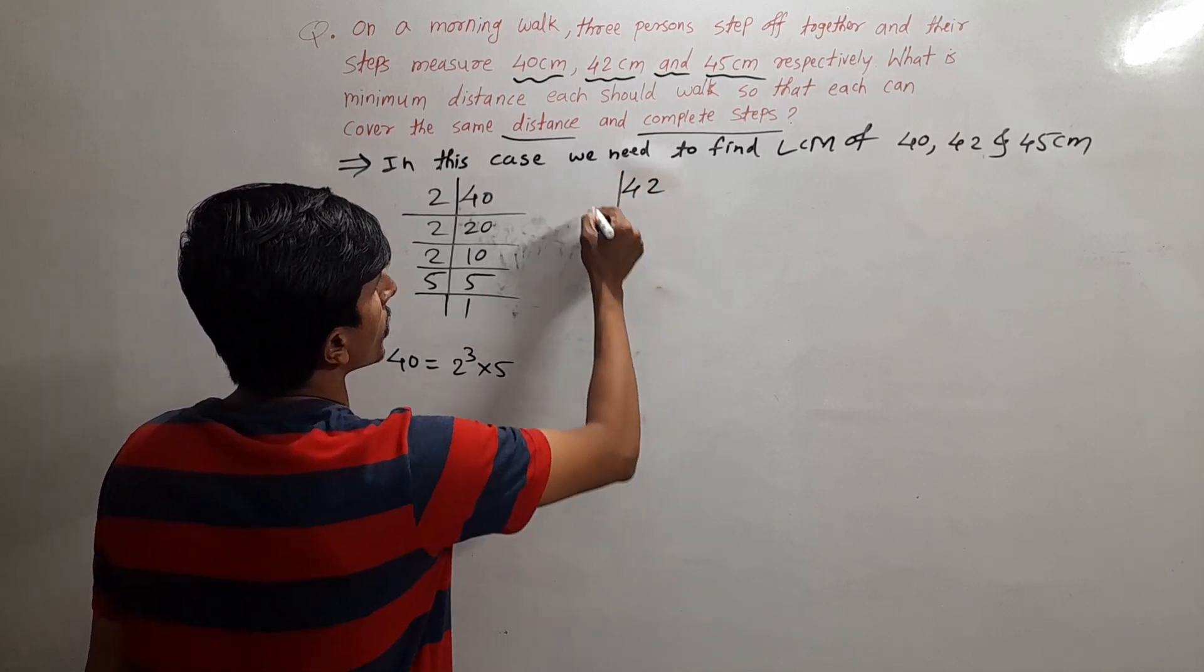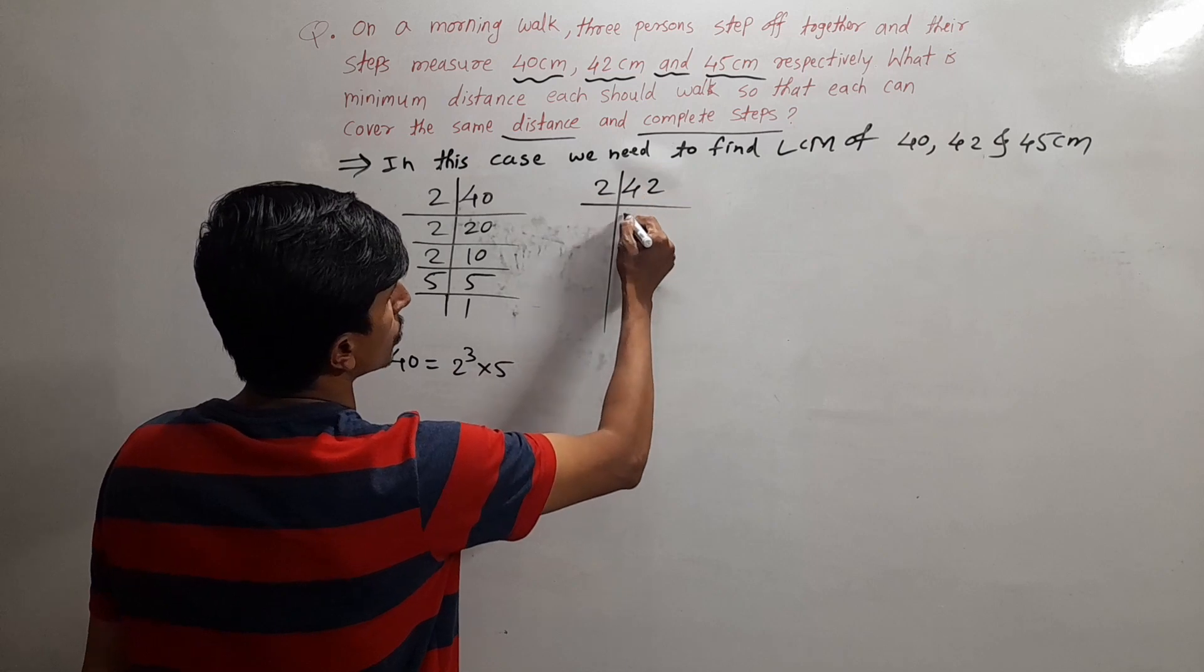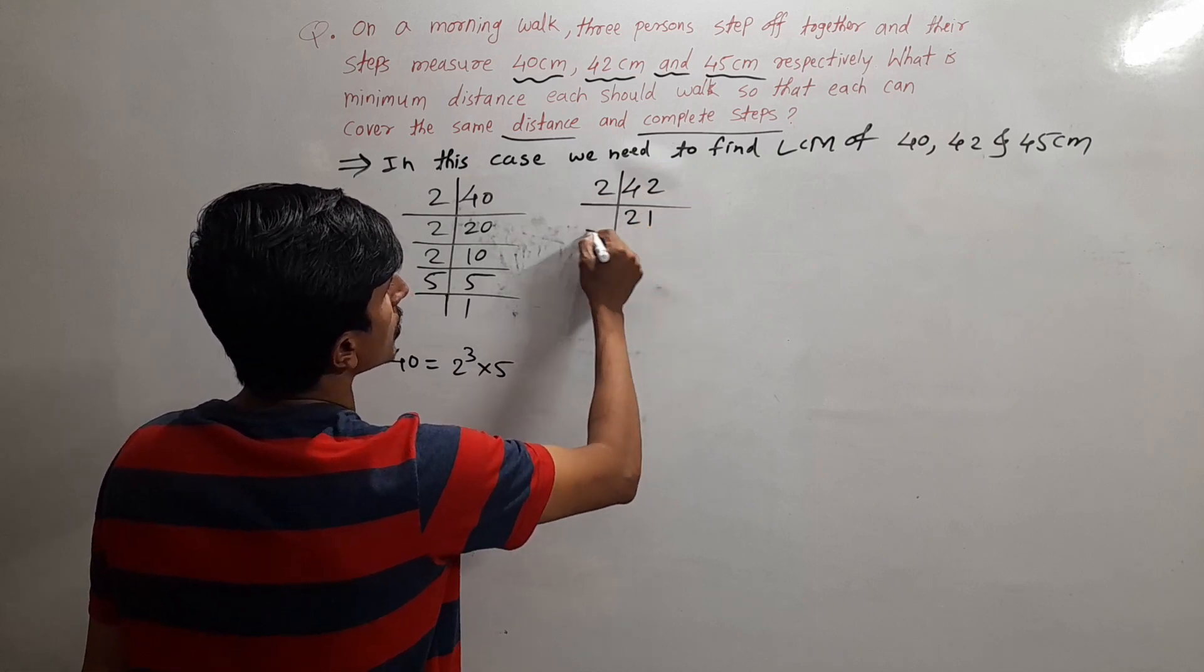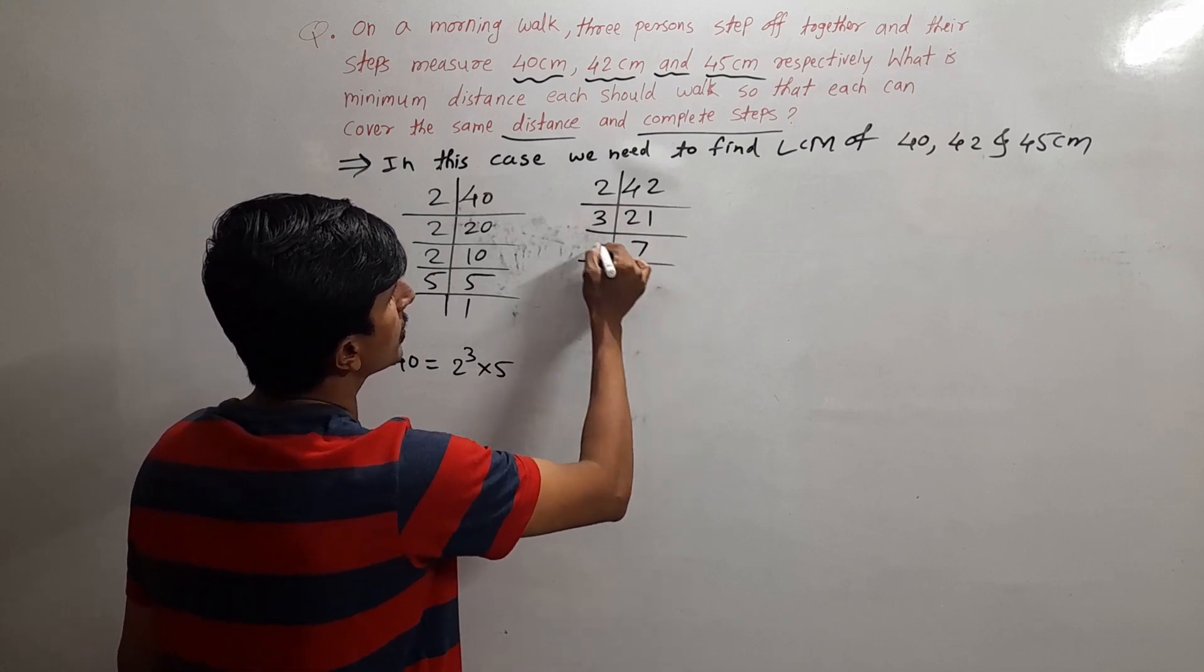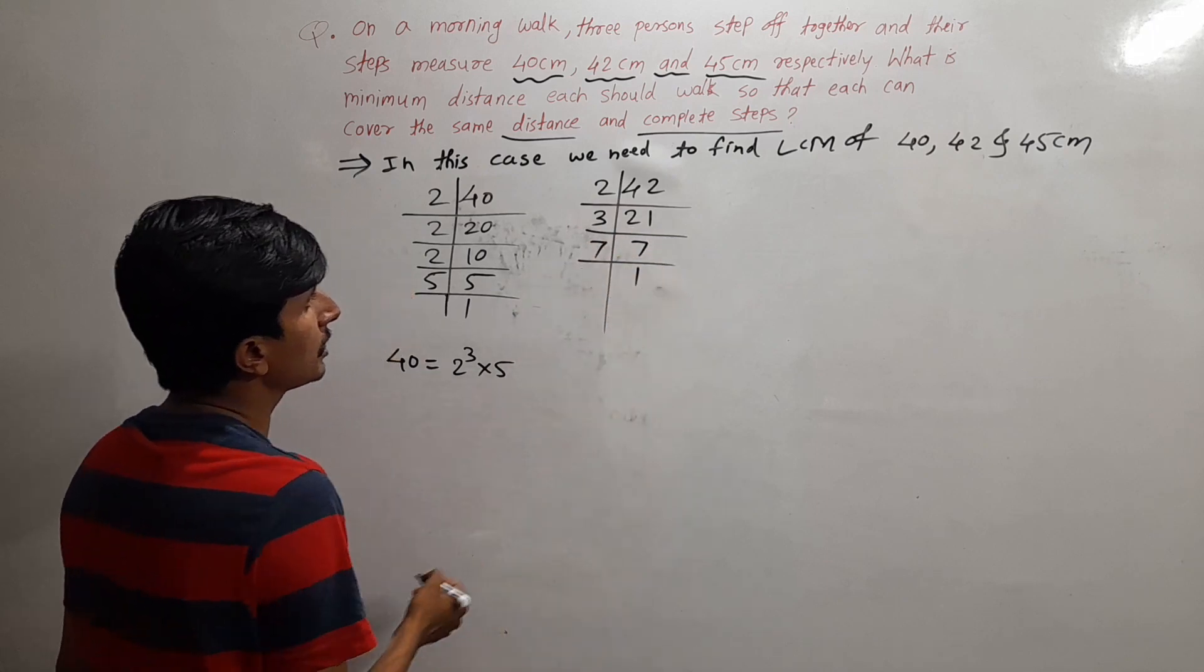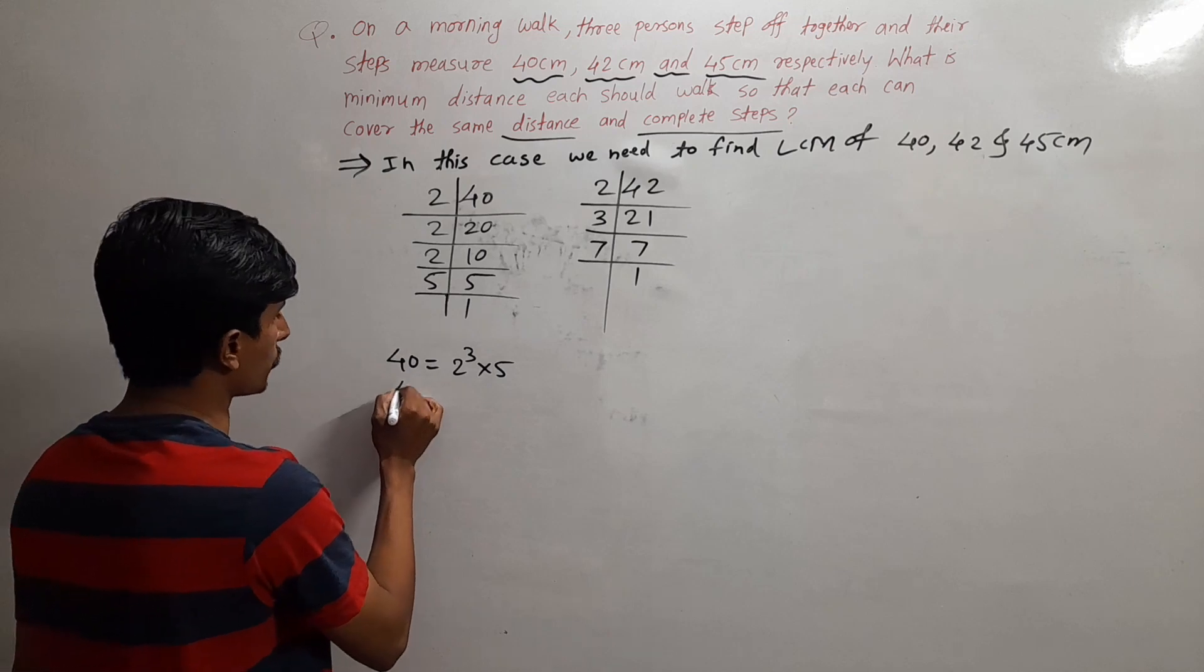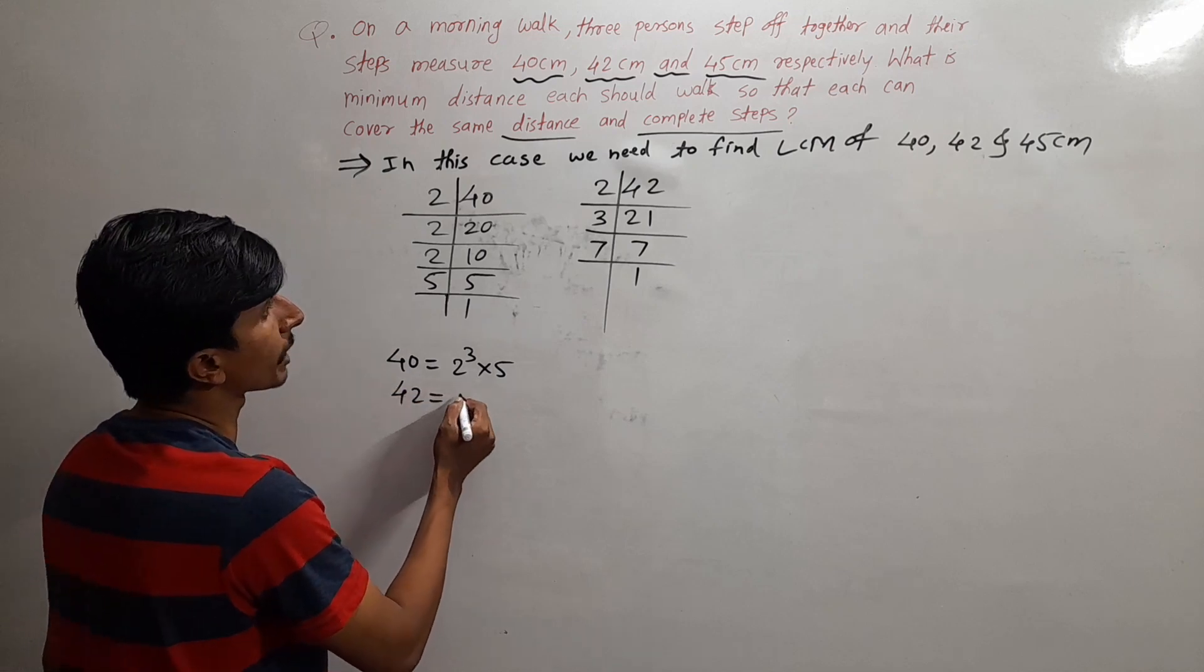Next we have to find the prime factors of 42. For 42: 2 times 21, 3 times 7. So 42 equals 2 × 3 × 7.